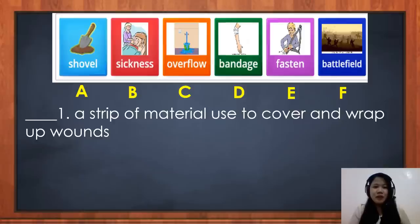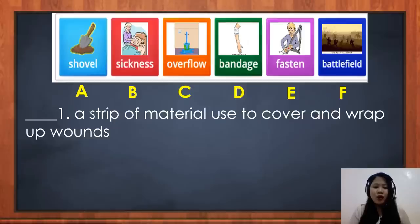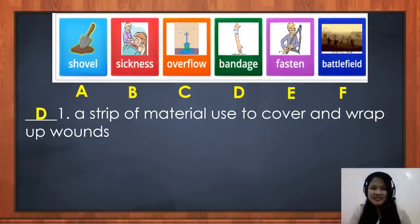For number 1: a strip of material used to cover and wrap up wounds. Is it A, B, C, D, E, or F? What is your answer? The correct answer is letter D — bandage. Did you get it correct? Very good!